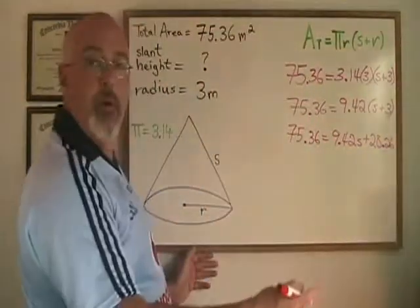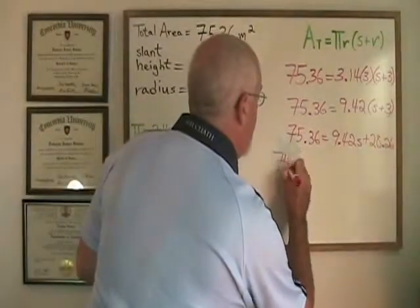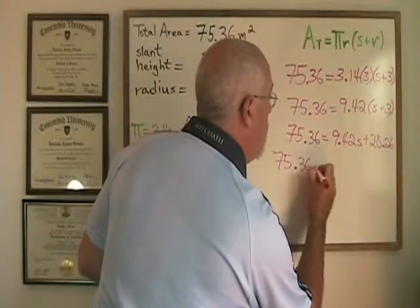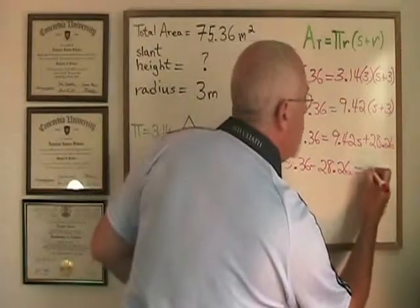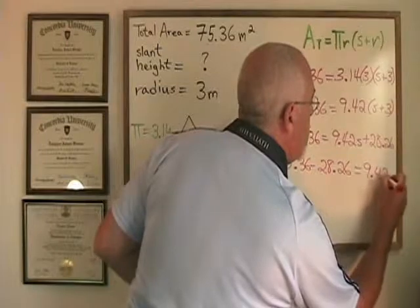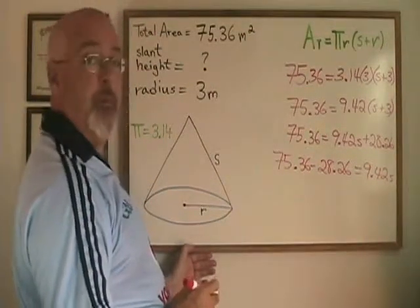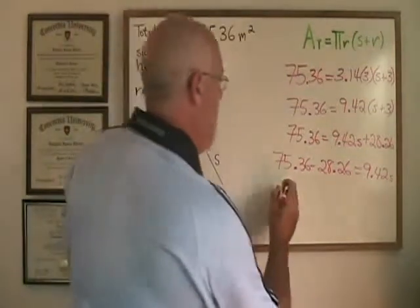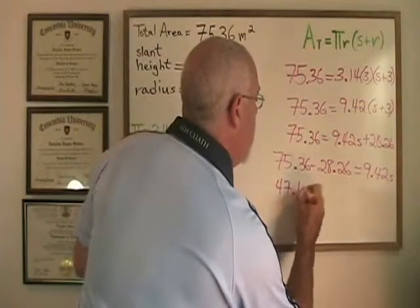Now I move the 28.26 to the other side of the equals where it becomes negative. 75.36 minus 28.26 is going to be 47.1.